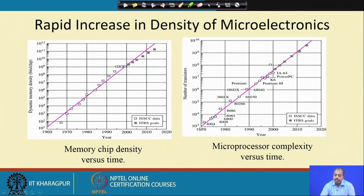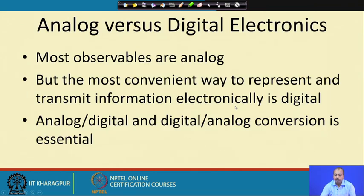Starting around 1975 the Intel 4004 was introduced, then in 1980 the 8008 was introduced. There are lots of developments taking place, and they more or less follow Moore's Law in the rate of increase of device density and computational power.